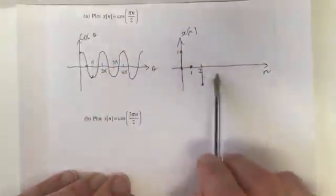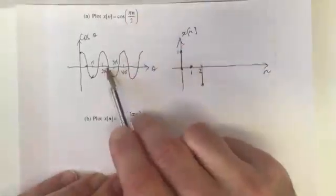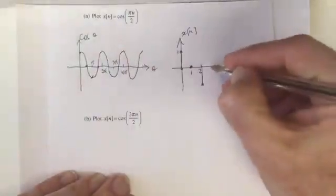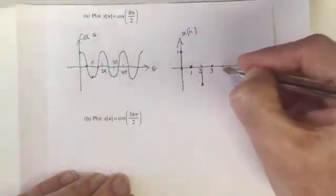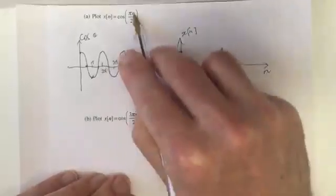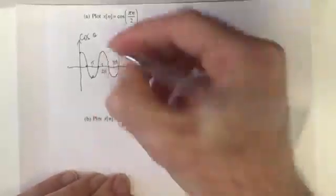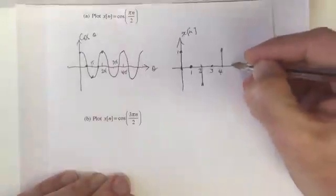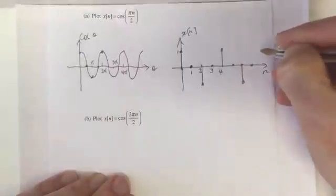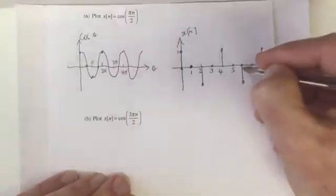And we keep doing this. n equals 3, with 3π/2, so 3π/2 is here, that's another 0. n equals 4, and we're back repeating ourselves. We've got cos(2π), and we've got this waveform. So this just repeats: 0, minus 1, 0, 1, as we go up in n.